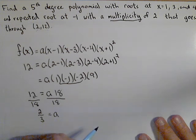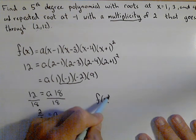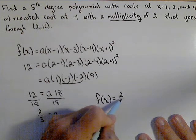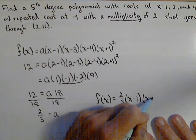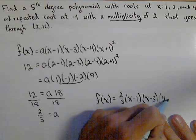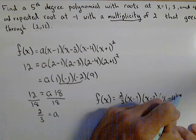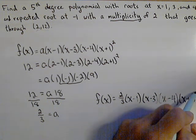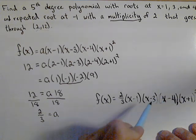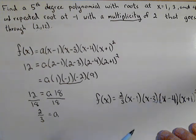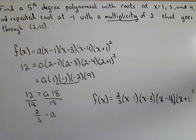So our unique polynomial is f(x) equals two-thirds times (x - 1) times (x - 3) times (x - 4) times (x + 1) squared. And we will just leave this in factored form. It would take a long time to multiply this out, but it's still the same polynomial. And that'll work anytime we're given the zeros of any polynomial and a point that it goes through.